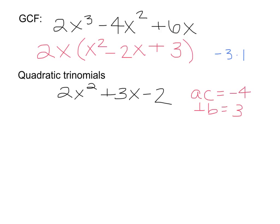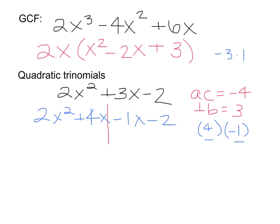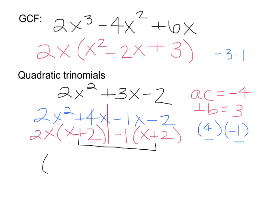Two numbers that multiply to negative 4 that add to positive 3 — those numbers are going to be 4 and negative 1. So we bring down the first term, write plus 4x next, then minus 1x, then bring down the last term, minus 2. Draw your line down the middle. What does 2x squared and 4x have in common? A 2 and an x, which leaves me with x plus 2. Whatever that sign is, you bring it down — since it's a minus, we bring the minus down. What goes into 1x and 2? Just the 1, so that also makes it x plus 2. If those two parentheses were not the same, you made a mistake. So you factor out the x plus 2 and you're left with 2x minus 1.